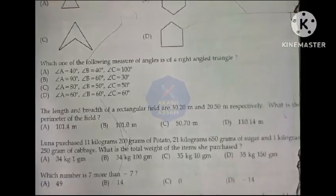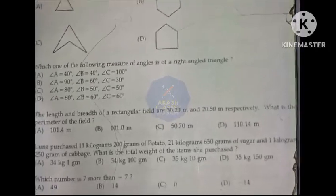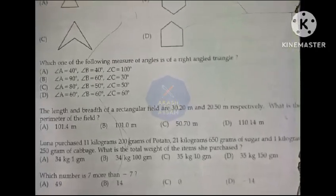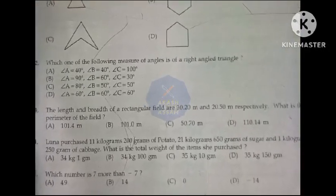Option B: angle A 90 degree, angle B 60 degree, angle C 30 degree. The length and breadth of a rectangular field are 30.20 m and 20.50 m respectively.